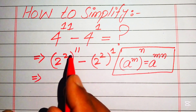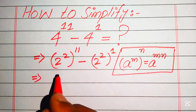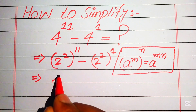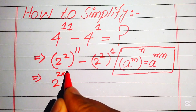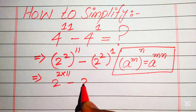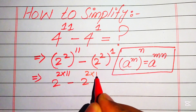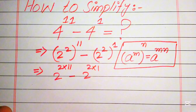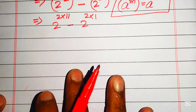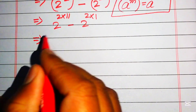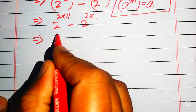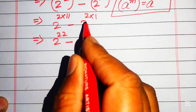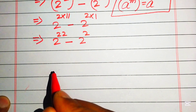We apply this exponential law to both terms. The two exponents are multiplied by each other, giving us 2 to the power of 2 times 11, minus 2 to the power of 2 times 1. After multiplying, 2 times 11 becomes 22, and 2 times 1 becomes 2.